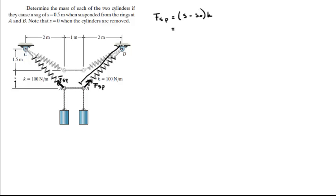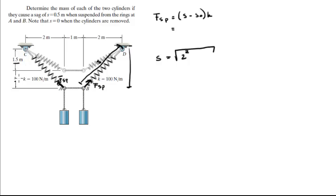S is the stretched length, given by the square root of 2 squared plus (1.5 plus S) squared. Since S is 0.5, that's the square root of 2 squared plus 2 squared, which is the square root of 8, approximately 2.828 meters. Now we need to find S0.